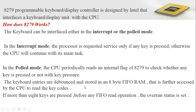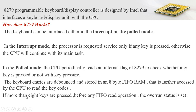The keyboard entries are debounced and stored in an 8-byte first-in first-out RAM that is further accessed by the CPU to read the key codes. If more than 8 keys are pressed before any FIFO read operation starts, the overrun status is set. We have an 8-byte RAM working in first-in first-out manner, and whenever more than 8 keys are pressed before a read operation starts by the CPU, it sets an overrun status.